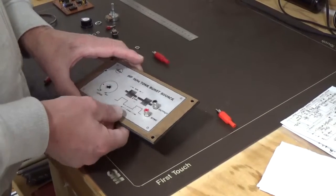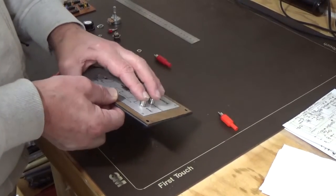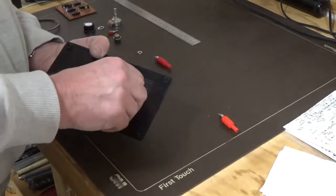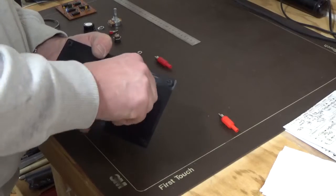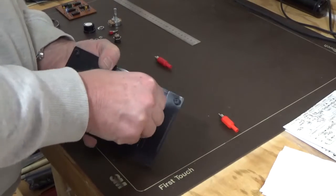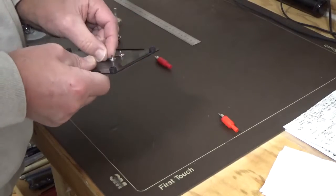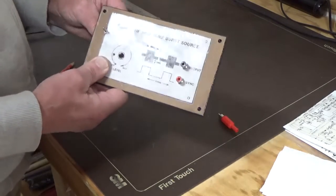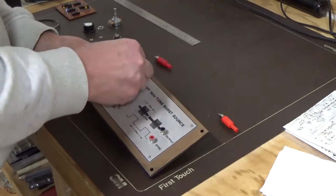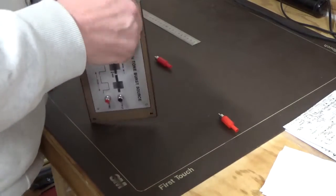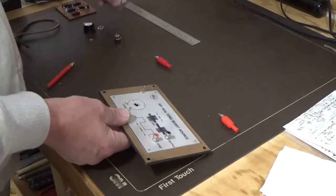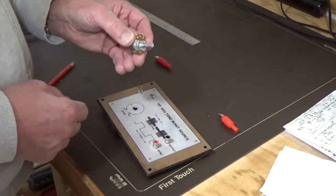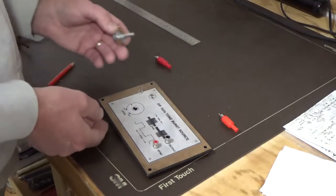So we're going to start putting our connectors on. We'll put our output and inputs on first. And the switch, we'll put the switch on. And the other one here we're going to have to trim off. That's too long, so we'll have to do some measurements for that. I'll trim that off and then put that on.